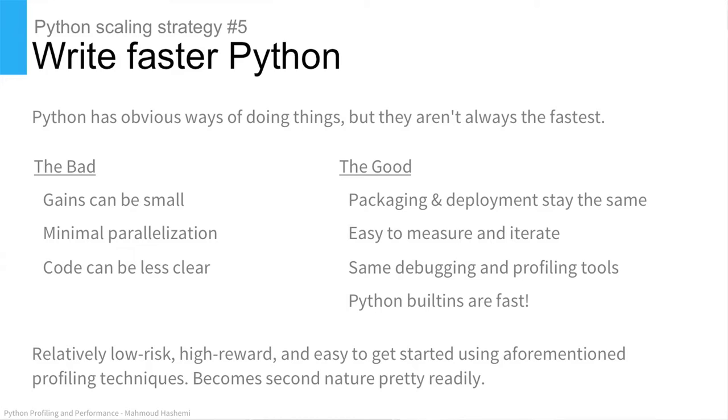Now we get into scaling strategy number five, the first Python-specific scaling strategy. All those previous things — adding more hardware, for instance — you can do with any stack. Now we're going to get into Python-specific stuff: we're going to write faster Python. Here we make small gains, but they sort of do add up. You can't really parallelize a lot for GIL and obvious reasons, and the code can also get less clear — typical of optimized code. Good news is that your packaging deployments stay the same, it's easy to measure and iterate, and the built-ins are very fast. The dictionary, very fast. List, very fast. Python string handling, very fast. It's low effort, high reward once you sort of stack those up.